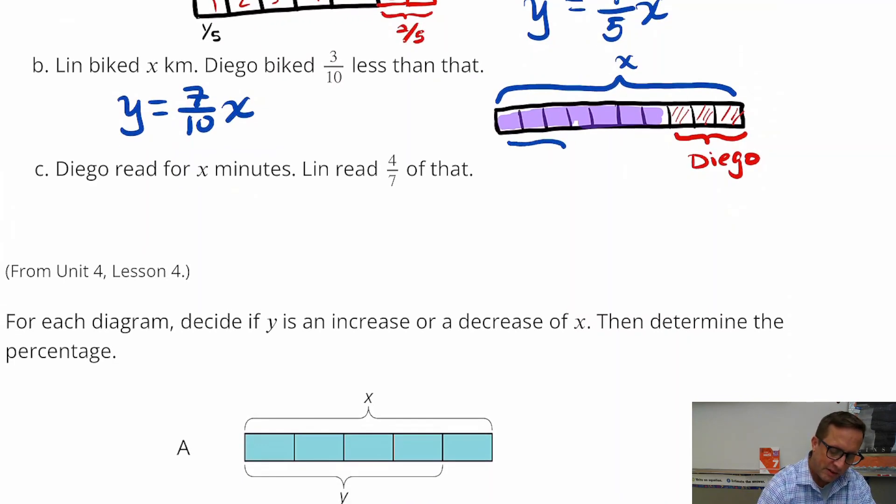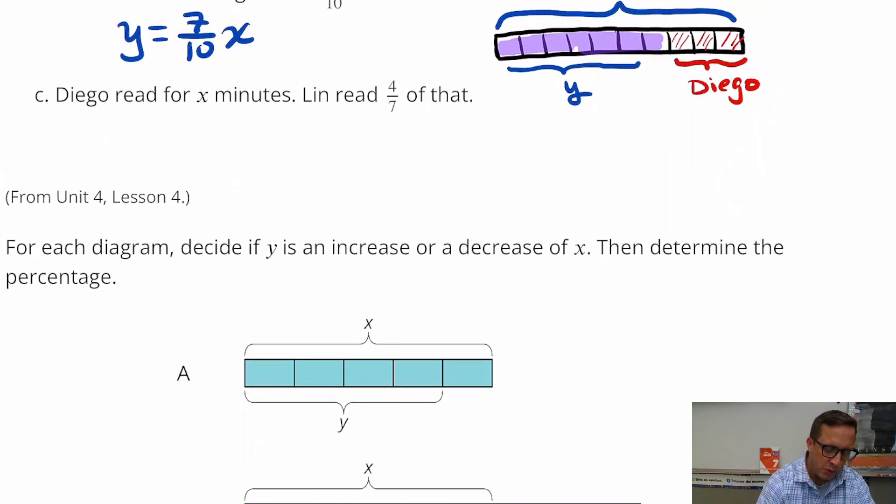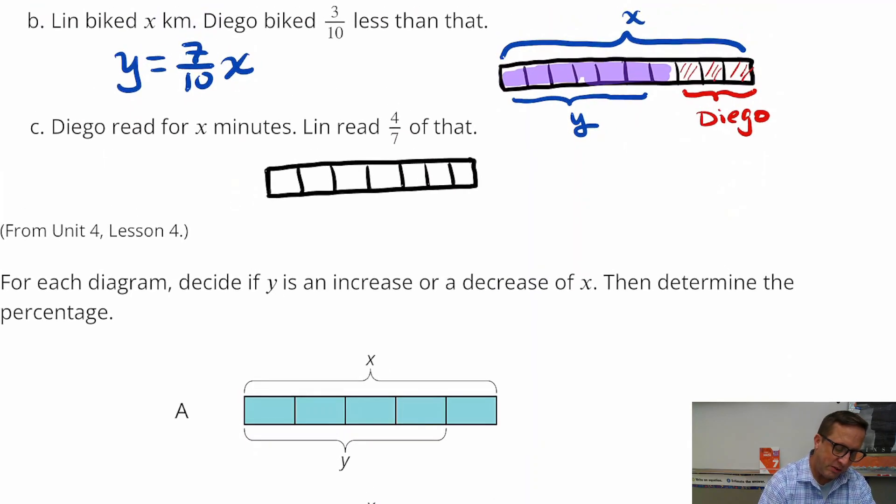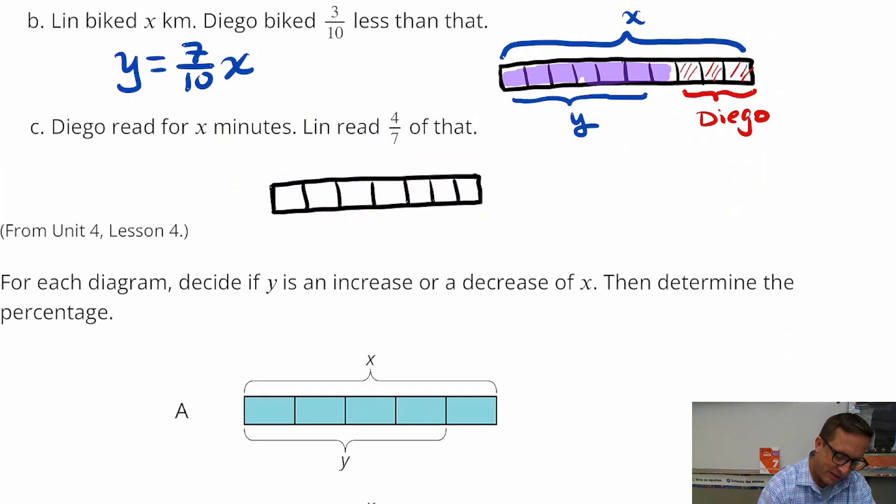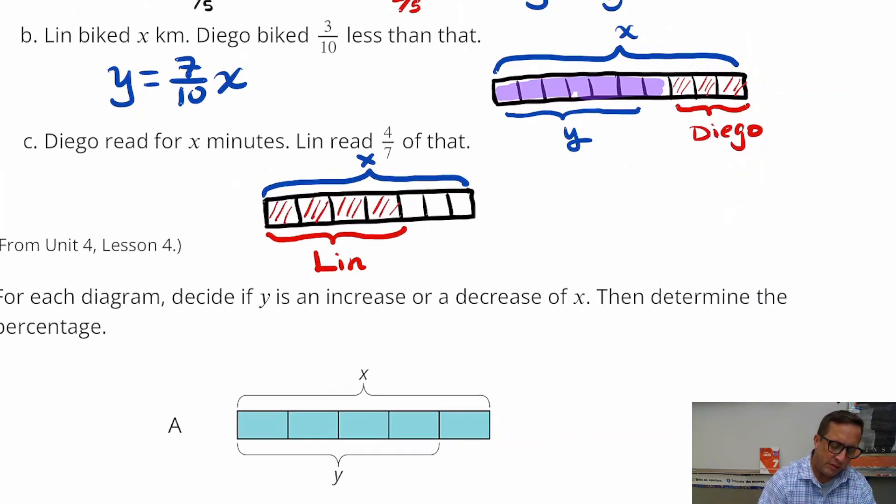Diego read x minutes. Lynn read four-sevenths of that. So I'm going to break this up into sevenths. So that's my best sevens right there. And so that represents x. That's what Diego read for. And then Lynn read four-sevenths of that. So that's what Lynn read. That's going to be just pretty straightforward. That's going to be just y equals four-sevenths x.